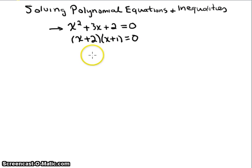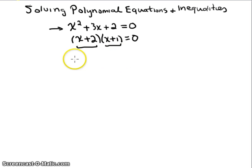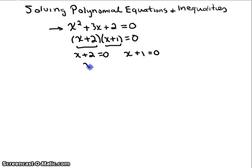Now we want to recognize that in order for two things multiplied together to equal zero, then one of these — or possibly both of them — would have to be equal to zero. So we say x + 2 = 0 and x + 1 = 0. Solving these, we find x = -2 and x = -1.